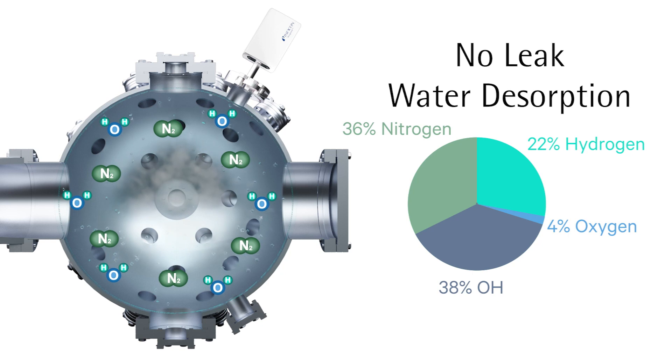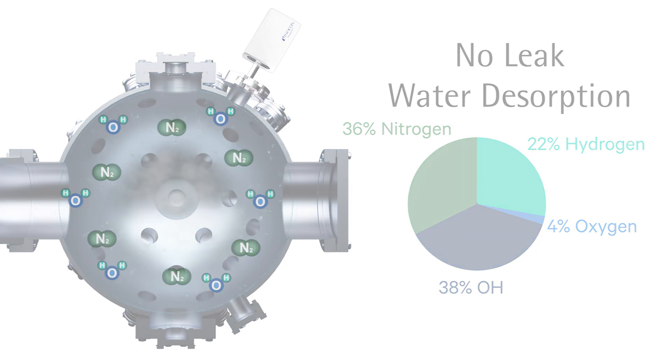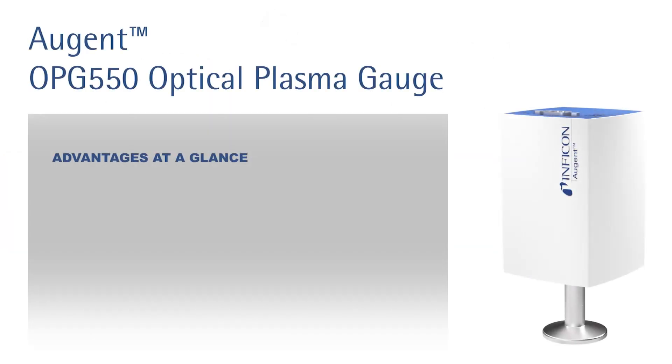The Augent OPG-550 allows fast and reliable detection of even small leaks.